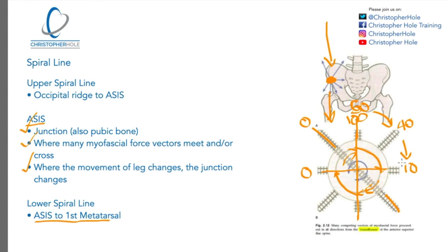So that is a brief overview of the spiral line. Hopefully it's given you a better understanding of the postural function, the movement function, a basic understanding of the anatomy, and a little bit on the roadhouse junction of the ASIS. Many thanks for watching. My name is Chris from Christopher Hole Training. I will speak to you in a future video.